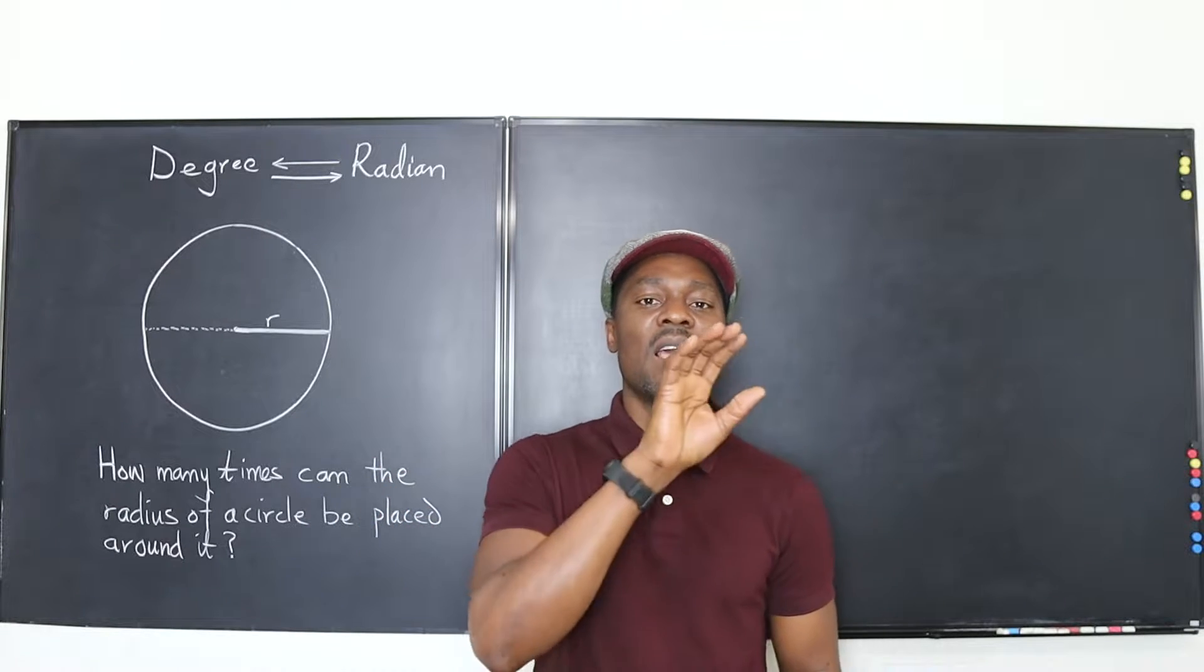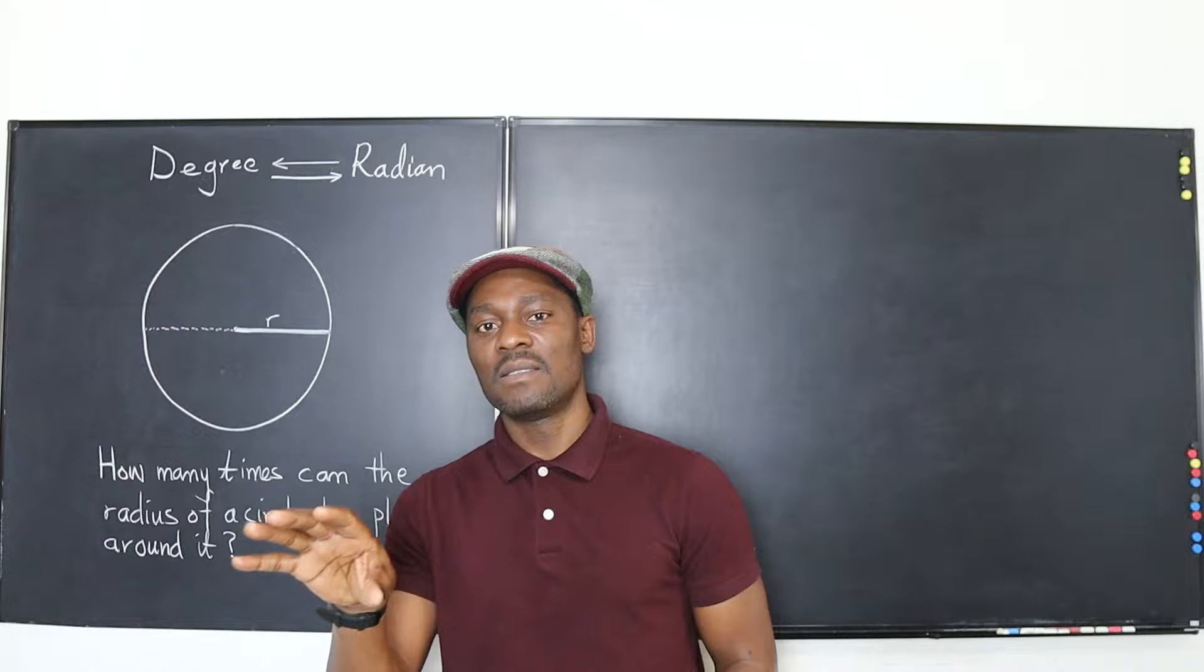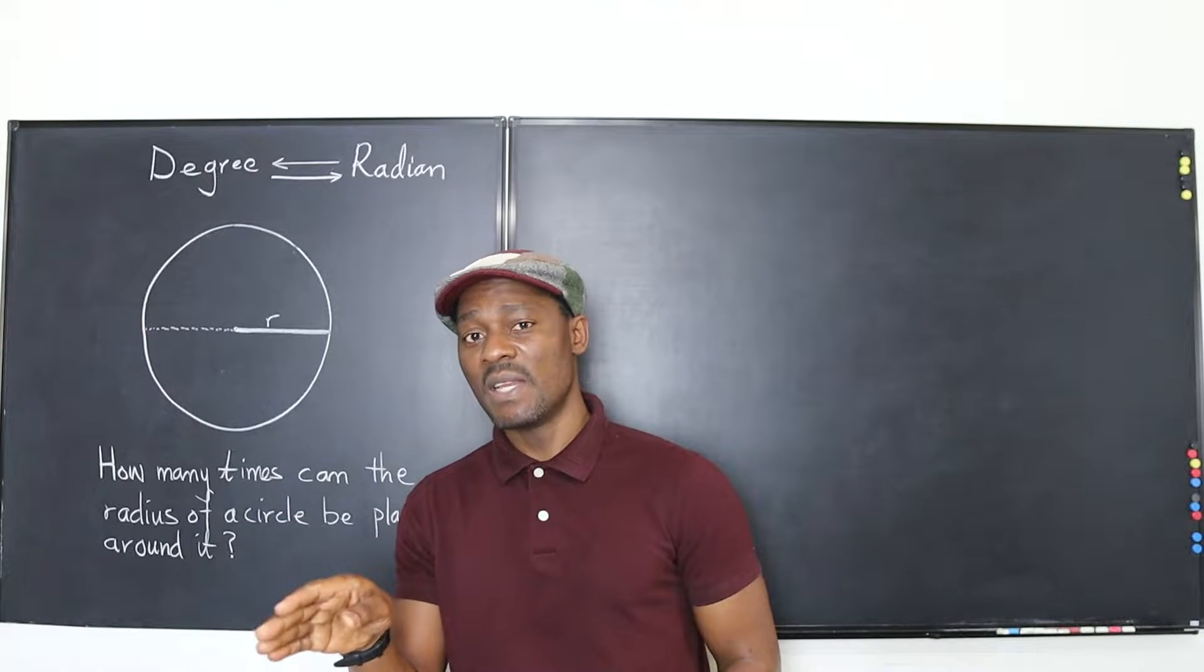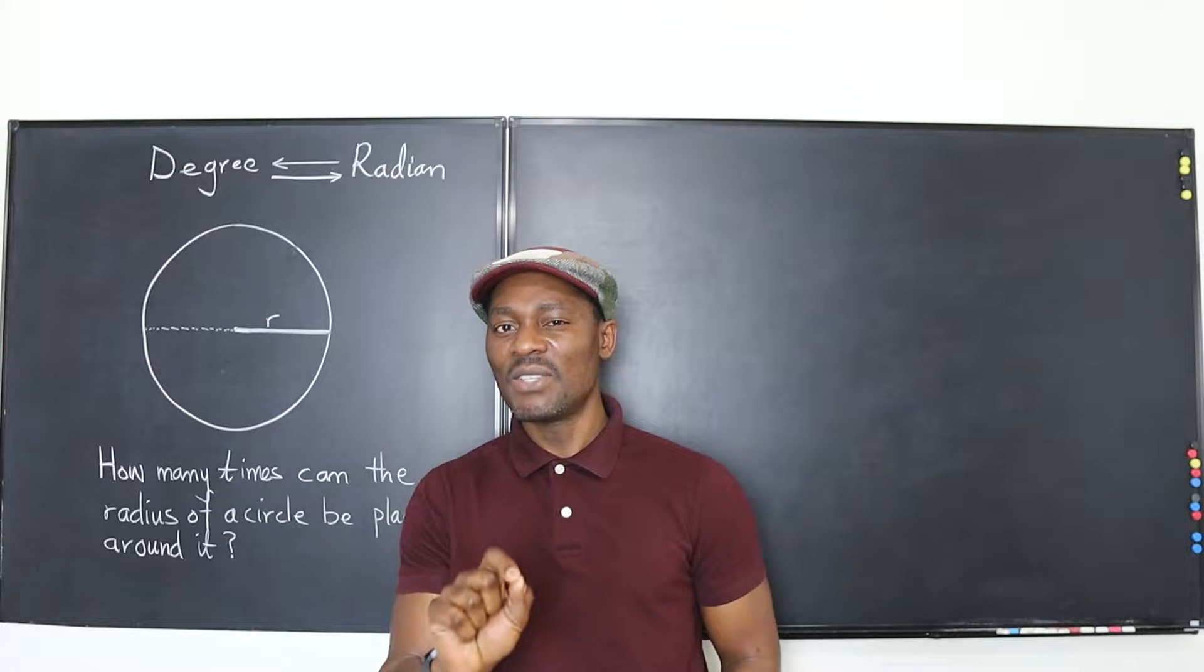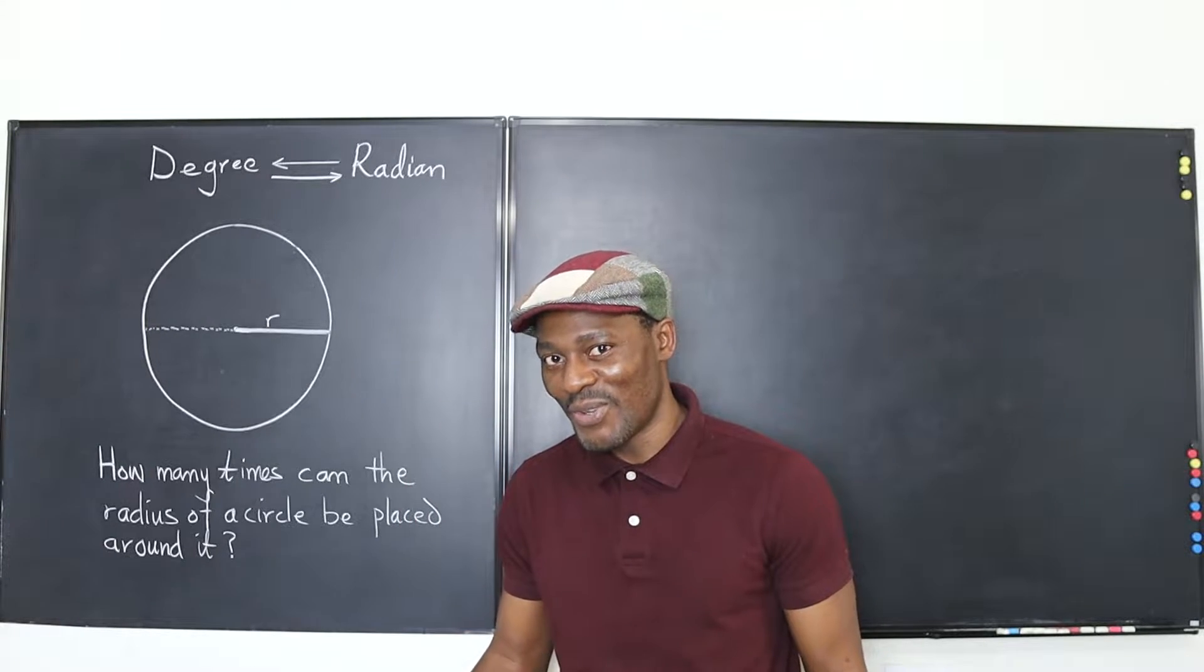We'll take some examples converting between degrees and radians. We can go from degrees to radians or from radians to degrees. But firstly let's understand what it means to have a radian measure.